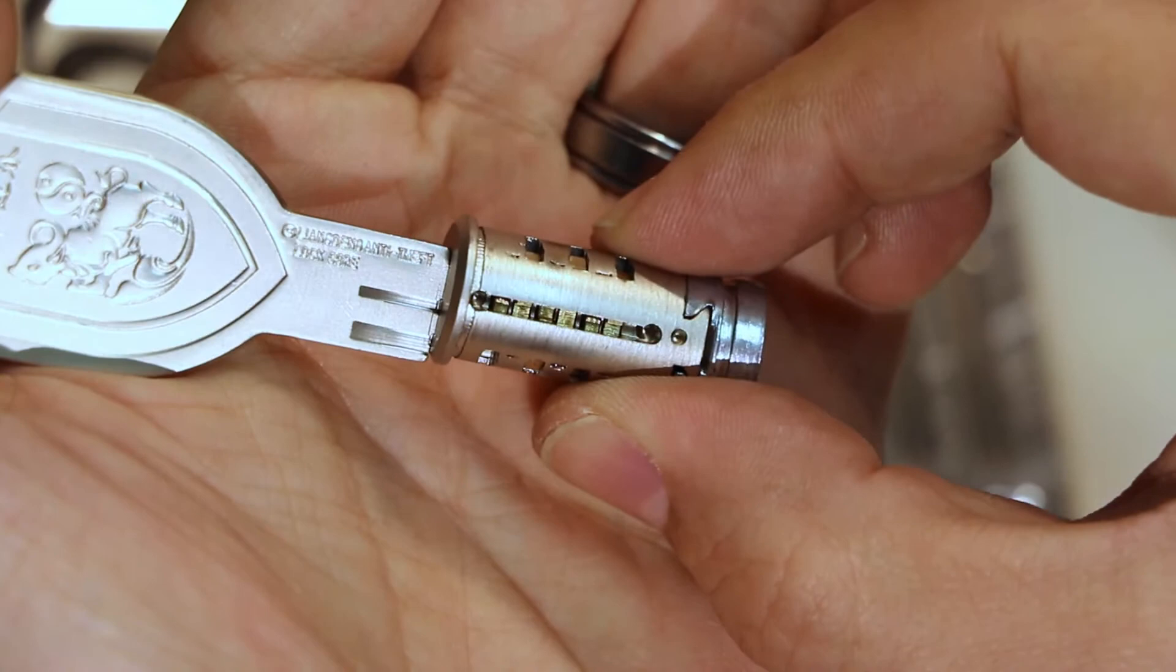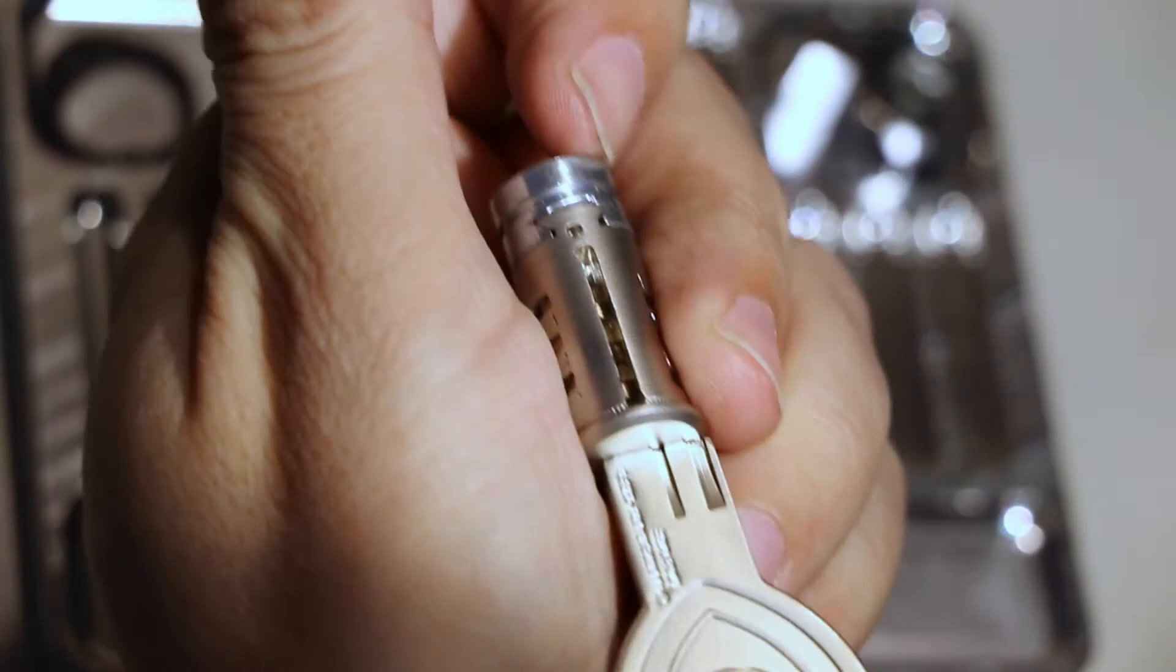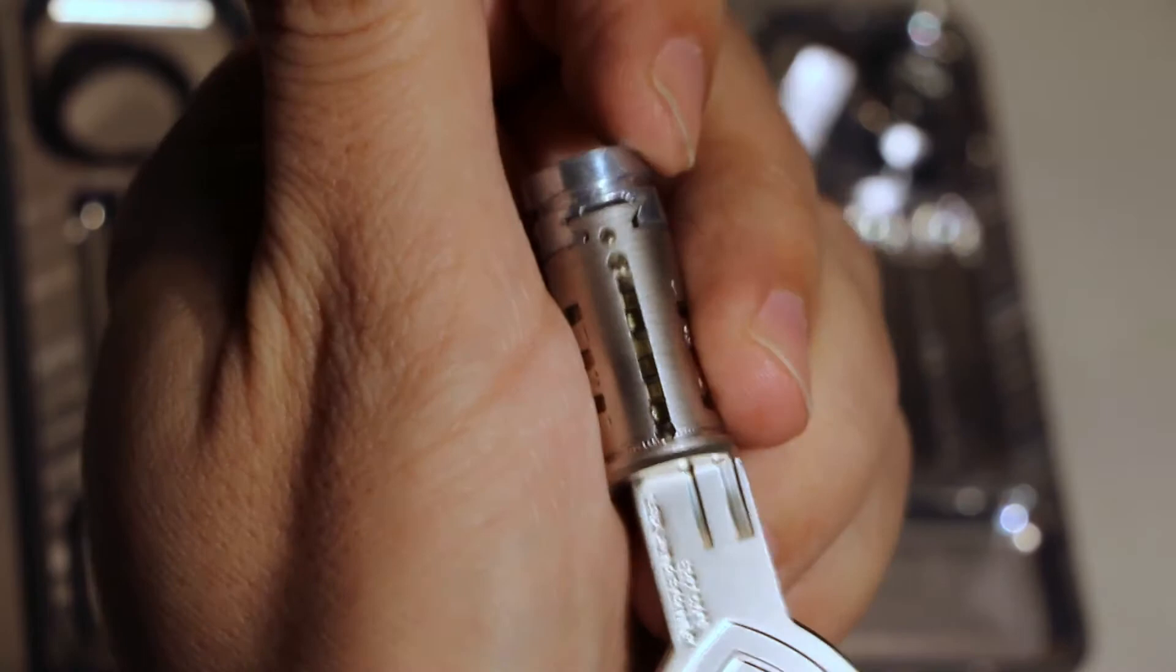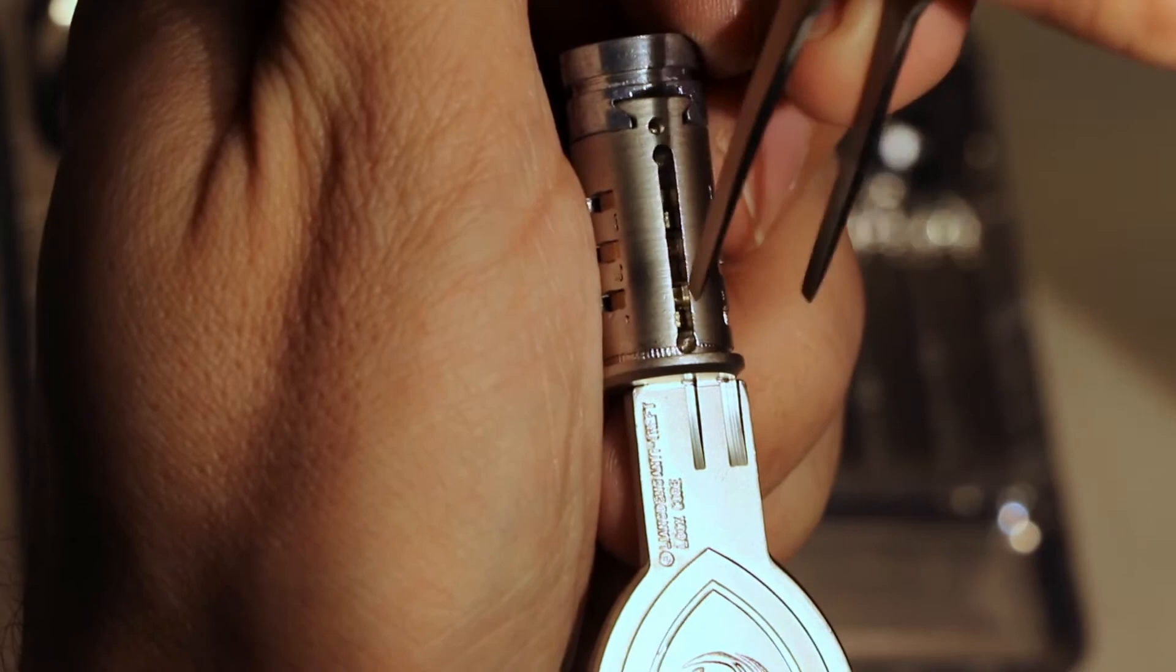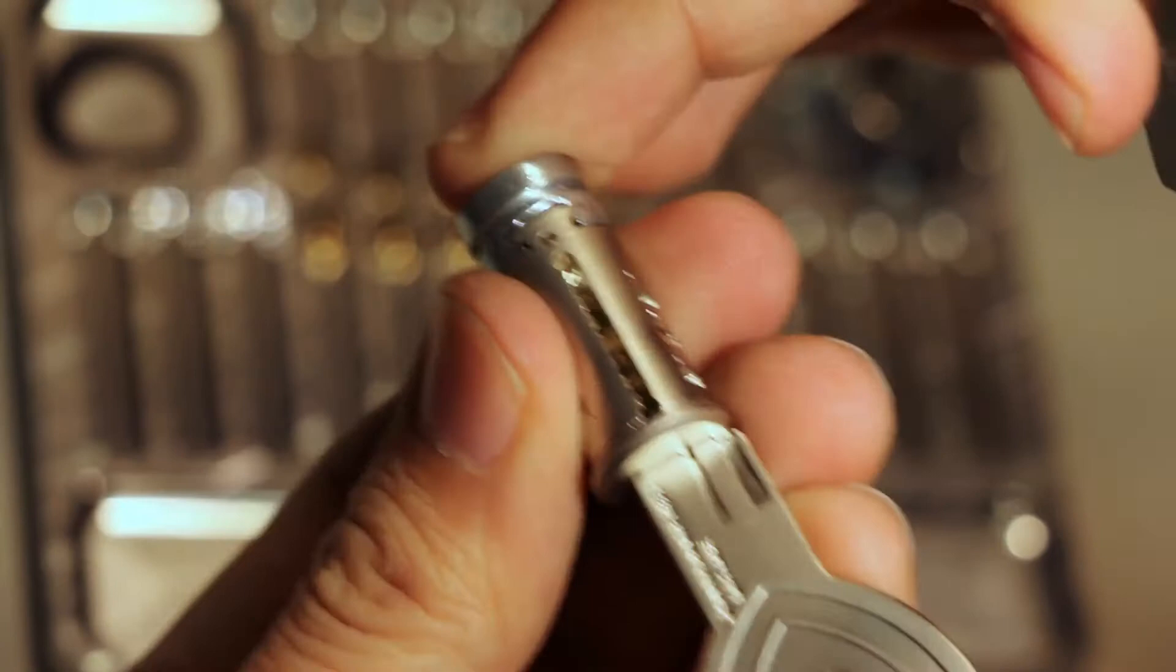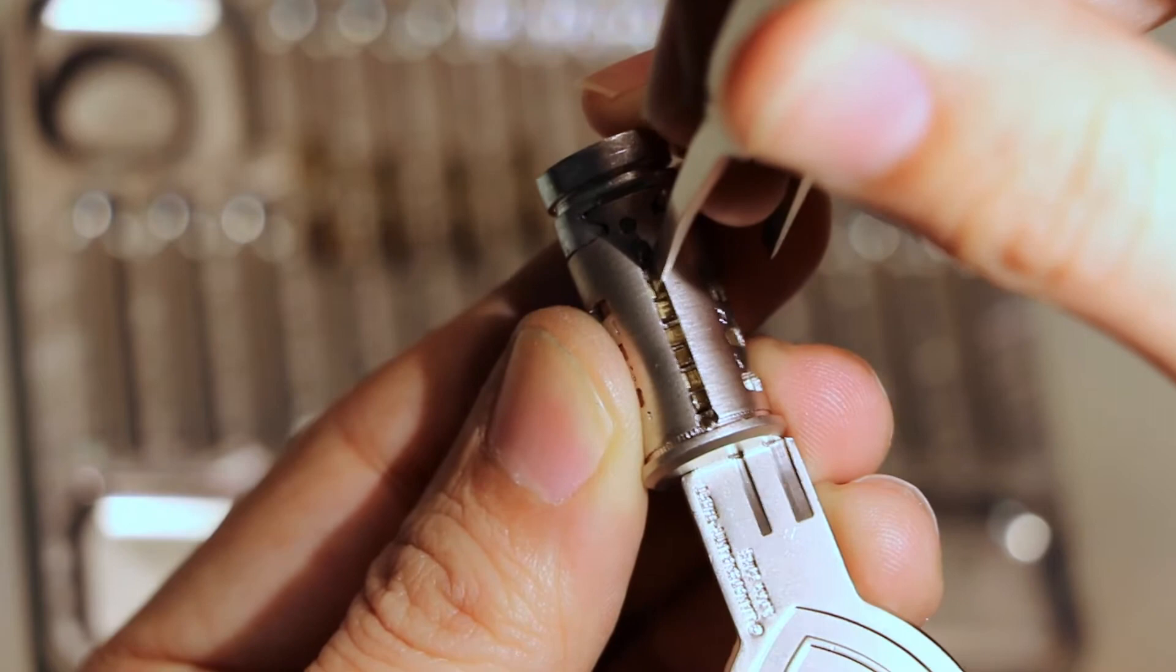Now why has it been made shorter? It would work. This lock would work perfectly if the sidebar was the right length, but it's been cut down. And why has it been cut down? Because with the key in, you can maybe see that some of these gates, let me get some light in here. Sorry about all the moving around. Some of these gates don't line up. Some of these gates aren't lined up to allow the sidebar to drop down. You can see this one right here.